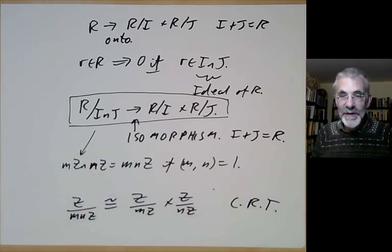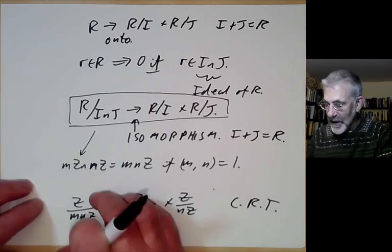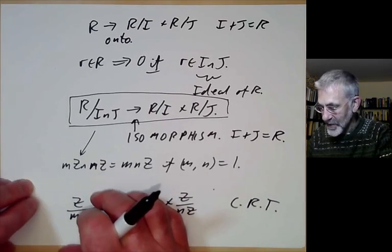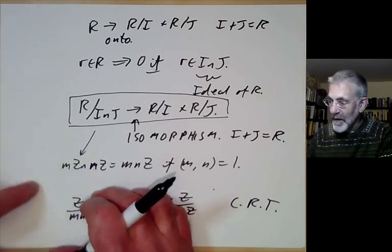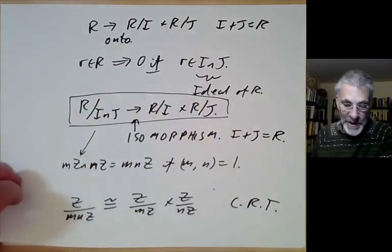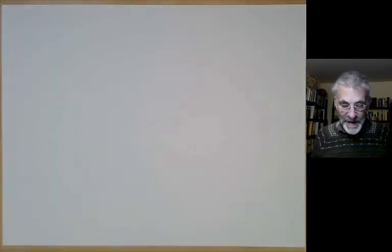So the Chinese Remainder Theorem generalizes to much more general rings and ideals.